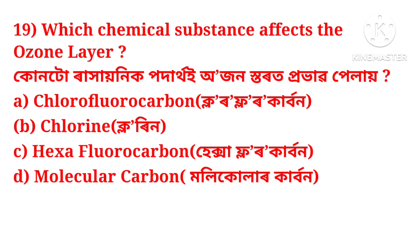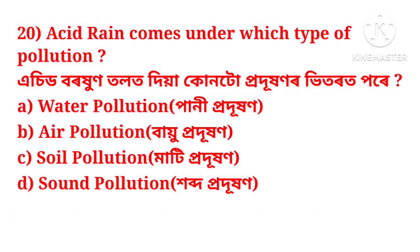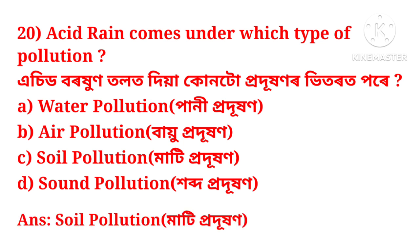Which chemical substance affects the ozone layer? The options are: chlorofluorocarbon (CFC), chlorine, hexafluorocarbon, or molecular carbon. The correct answer is chlorofluorocarbon. The next question is: acid rain comes under which type of pollution? The options are: water pollution, air pollution, soil pollution, or sound pollution. The correct answer is soil pollution.